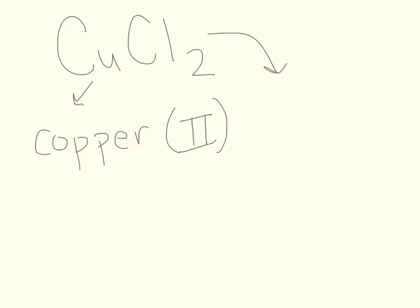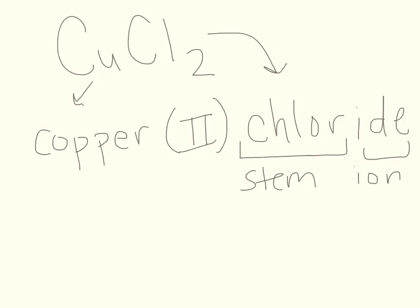So to name my copper with my 2 chlorines. I have my cation which is copper. And it's a transition metal so I need to record my roman numerals, 2. And then I write my anion chloride. Because chlor, this is the stem. And then I add my IDE ending because it's an ion. So I have copper(II) chloride.